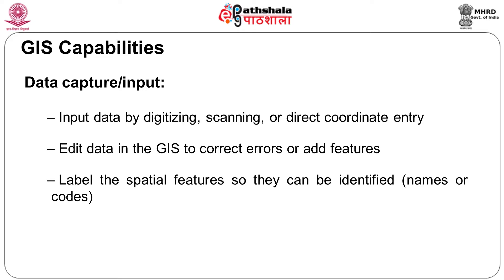The next important thing is labeling the features. All features could be point or line data. They can all be identified, named and coded together. Hence, a GIS software should be capable of inputting the data, editing the data, and labeling the data, so that I will be in a position to use the data effectively.